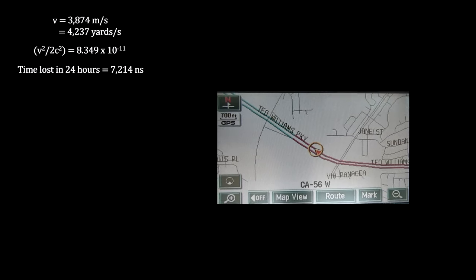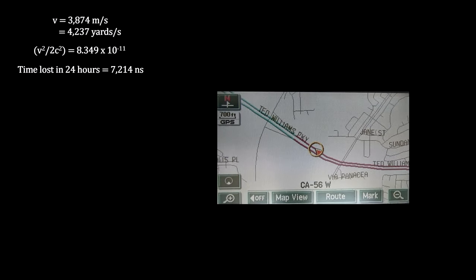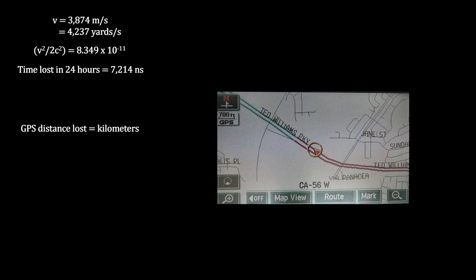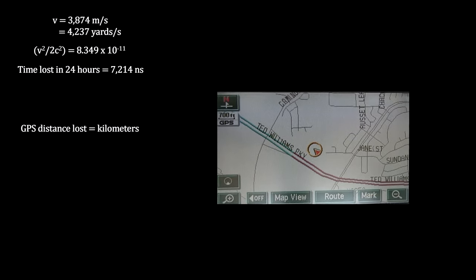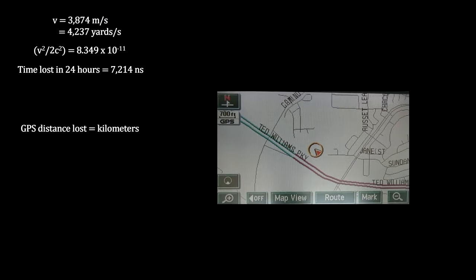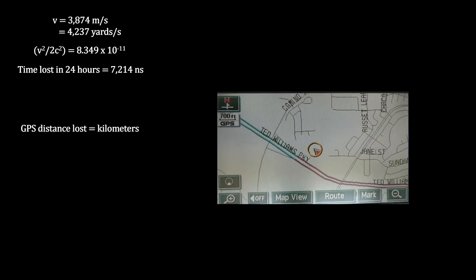If onboard clocks aren't corrected regularly based on Lorentz's time dilation formula, the position data they produce would be off by kilometers in less than a day.